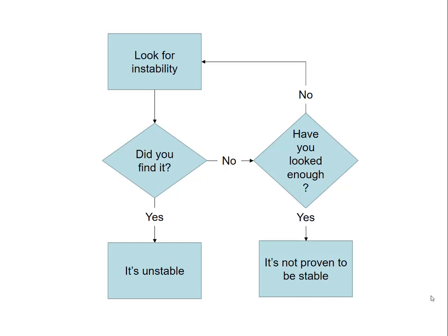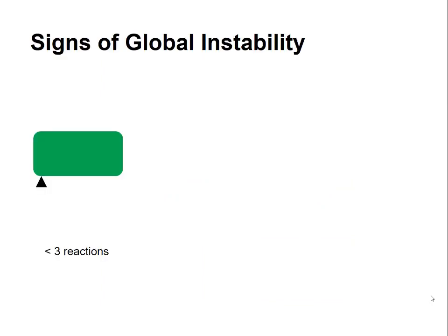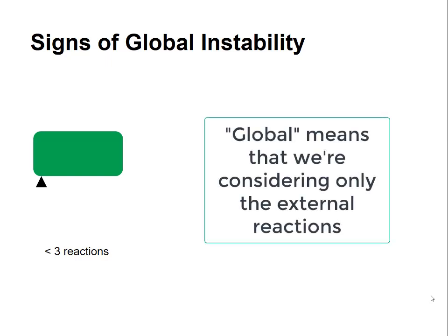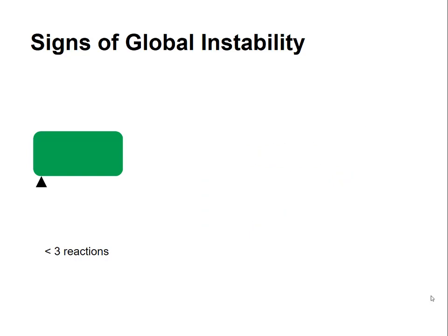Next, we'll look at some examples. First, we'll look at global instability and I'll present to you three ways that you can tell that the structure is globally unstable. Global means that we're considering simply the external reactions of the structure. In one case, you could have less than three reactions as is shown in the diagram. That block acting under the influence of gravity, for instance, would clearly rotate about the pin. That is not a stable structure.